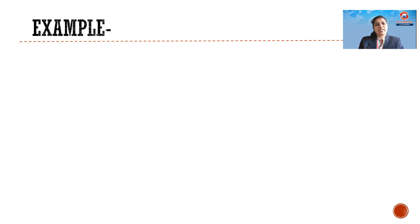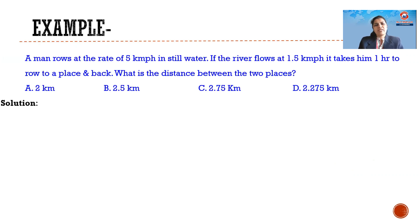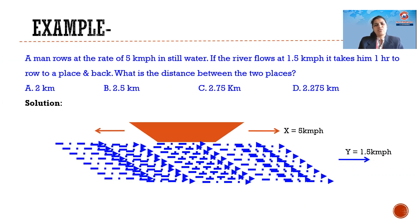Let's take a small example to understand this concept in a better way. As per the given data, the speed of water is 1.5 kilometers per hour and the speed of the boat is 5 kilometers per hour. The process of upstream and downstream is done in the time period of 1 hour.